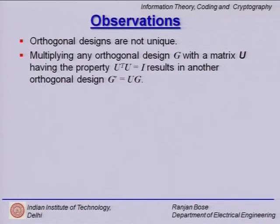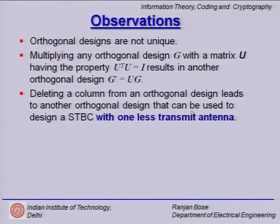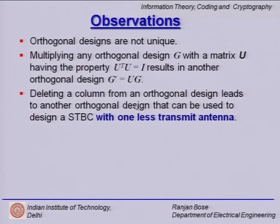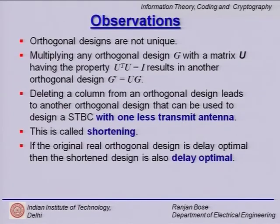Some observations: orthogonal designs are not unique. Multiplying any orthogonal design G with a matrix U having the property U_transpose·U=I results in another orthogonal design. Also, deleting a column from an orthogonal design leads to another orthogonal design that can be used to design a space time block code with one less antenna — this process is called shortening. If the original real orthogonal design is delay optimal, then the shortened design is also delay optimal.